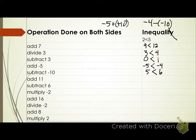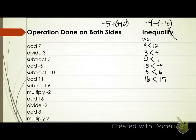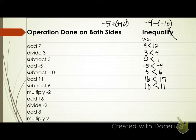Let's add eleven to both sides. Five plus eleven is sixteen. Six plus eleven is seventeen. Inequality symbol? Less than. Subtract six: sixteen minus six is ten. Seventeen minus six is eleven. Symbol? Less than. Everyone good?